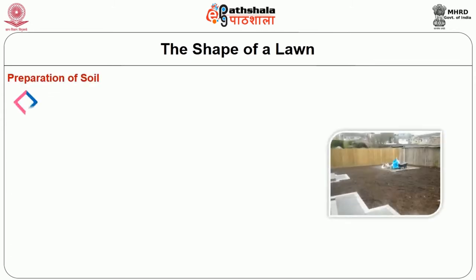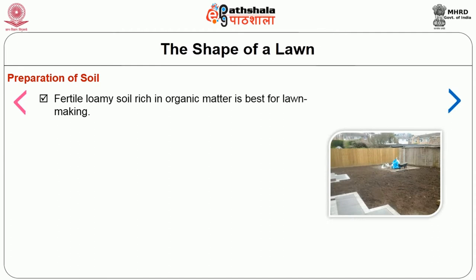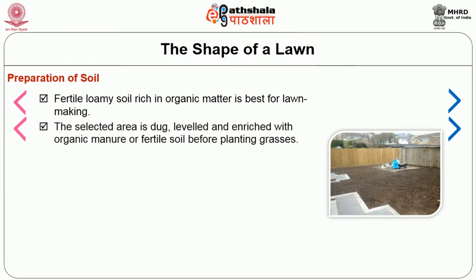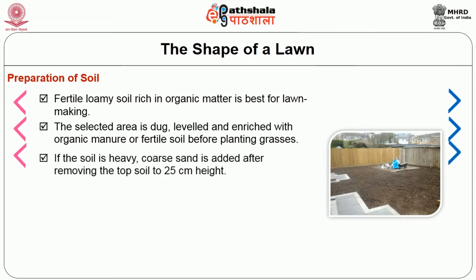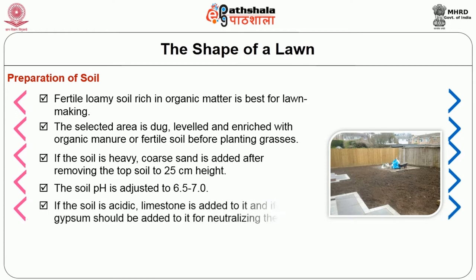The second step is preparation of soil. Fertile loamy soil rich in organic matter is best for making a lawn. The selected area is dug, leveled and enriched with organic manure of fertile soil before planting the grasses. If the soil is heavy, coarse sand is added after removing the top soil to 25 cm height. If the soil is acidic, limestone is added to it, and if alkaline, gypsum should be added to neutralize the pH.